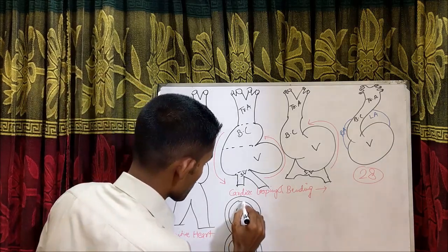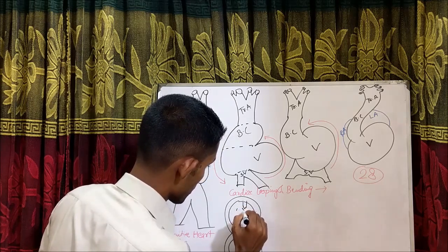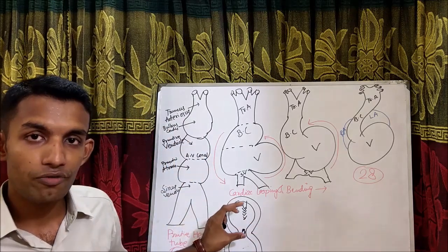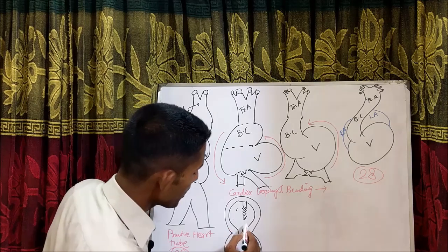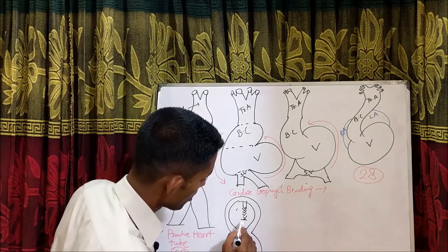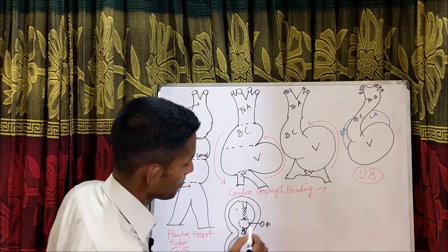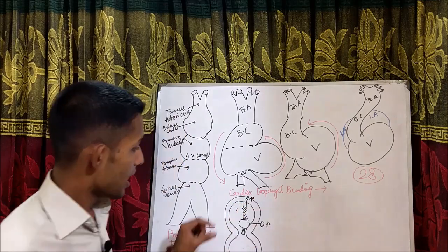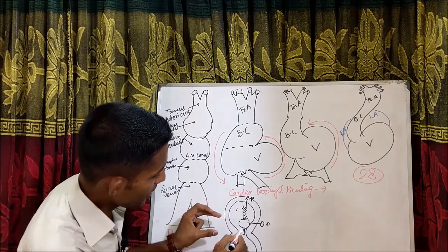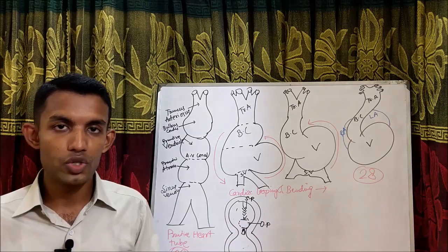Septum primum grows in this direction, keeps on growing. Before the full growth of septum primum, there is an opening between the lower rim of the septum primum and the endocardial cushion. This is called ostium primum. So this is septum primum, and before its full growth, the opening between the endocardial cushion and septum primum is called ostium primum.